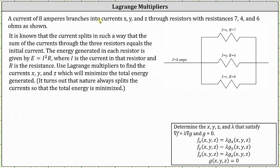A current of eight amperes branches into currents x, y, and z through resistors with resistances seven, four, and six ohms as shown on the right. It is known that the current splits in such a way that the sum of the currents through the three resistors equals the initial current.